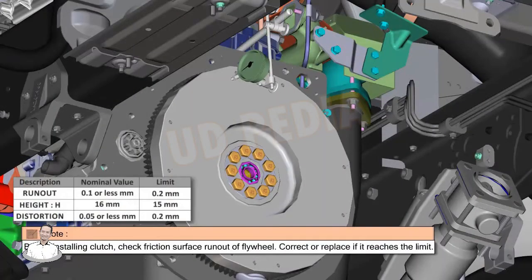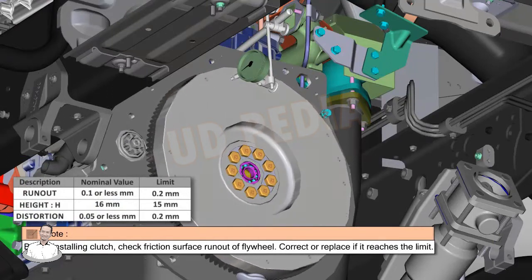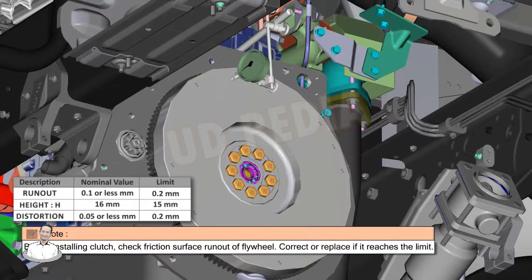Assembly of clutch on vehicle. Before installing the clutch, check the friction surface and run out of the flywheel. Correct or replace if it reaches the limit.